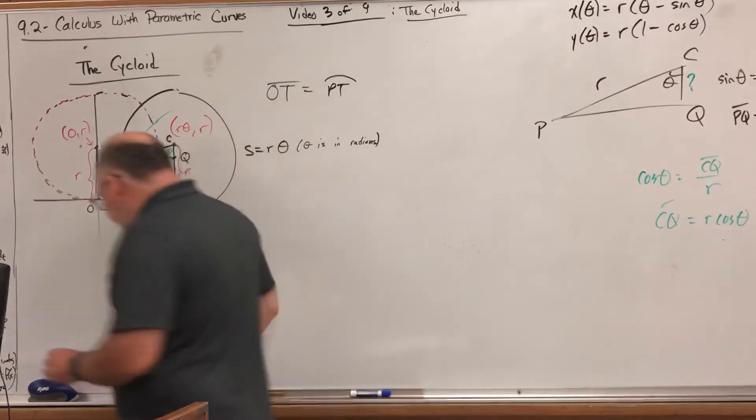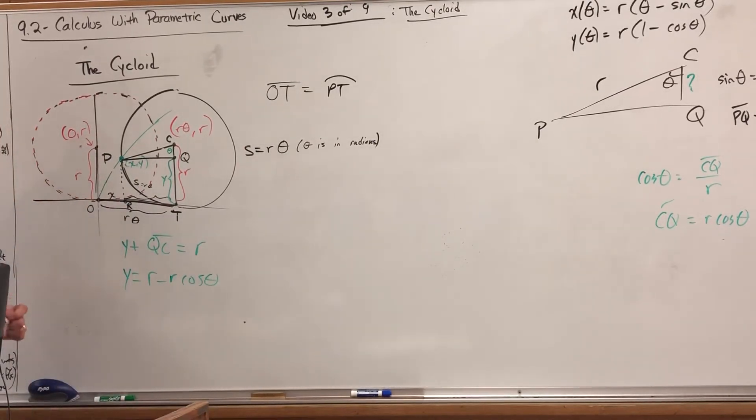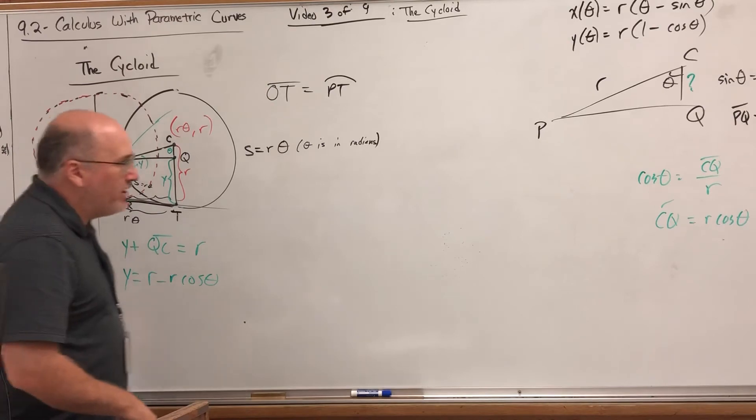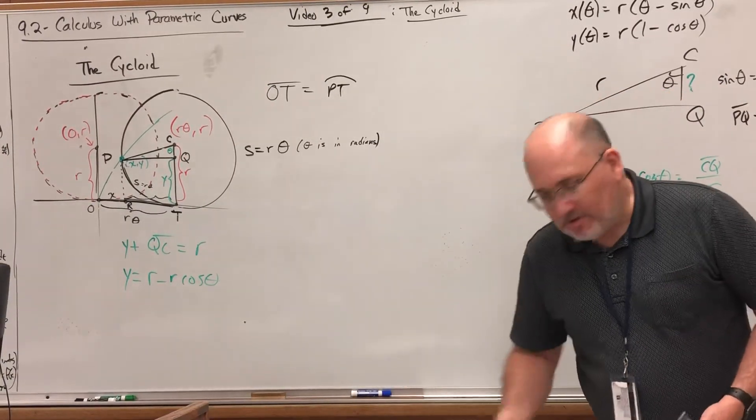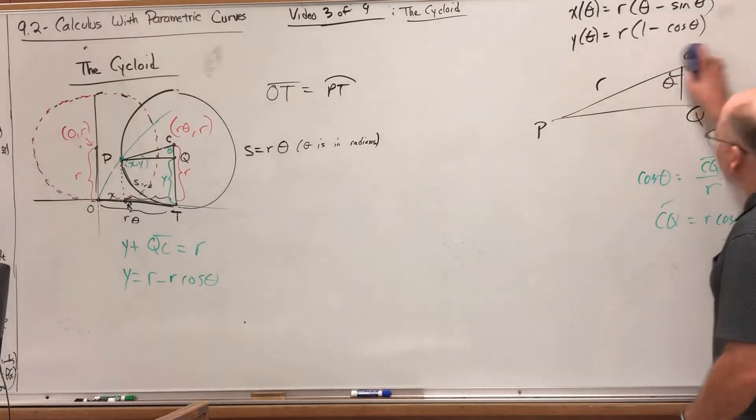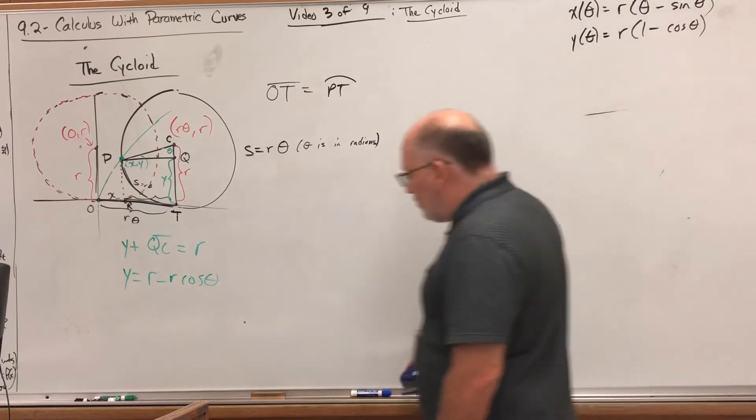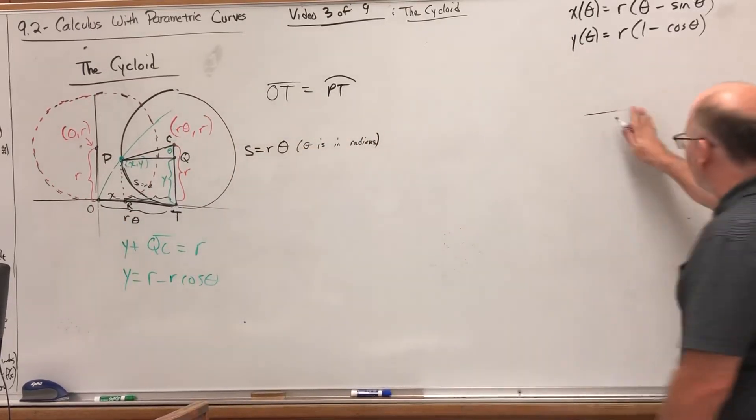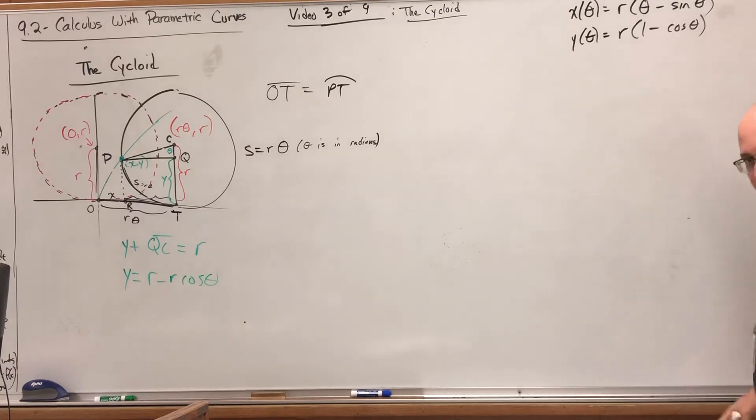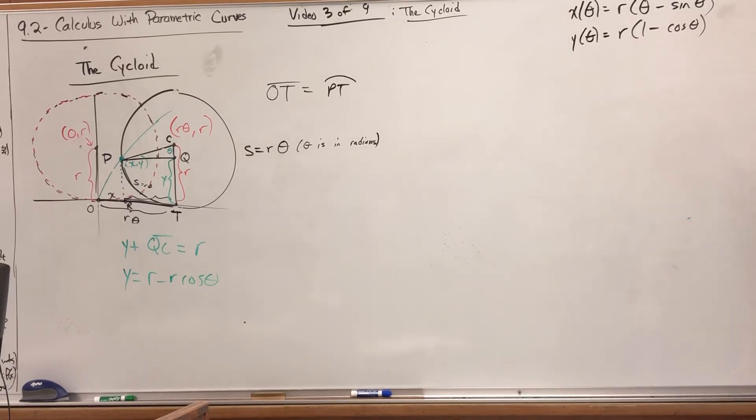I'll be honest, I usually don't have the cycloid parametric equations memorized. I kind of remember how to derive them, though I say kind of because I've been looking in my book. But these are the equations of the cycloid, and we can use them to figure out what the path of that point looks like as we roll this from left to right.